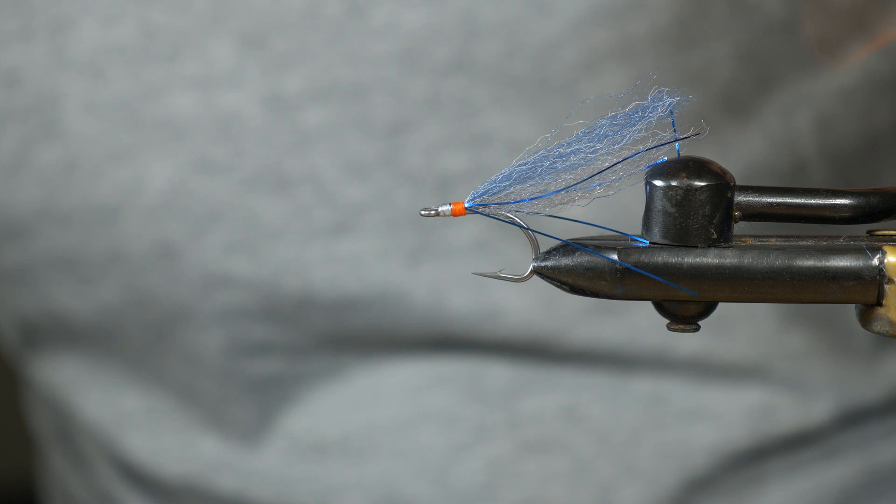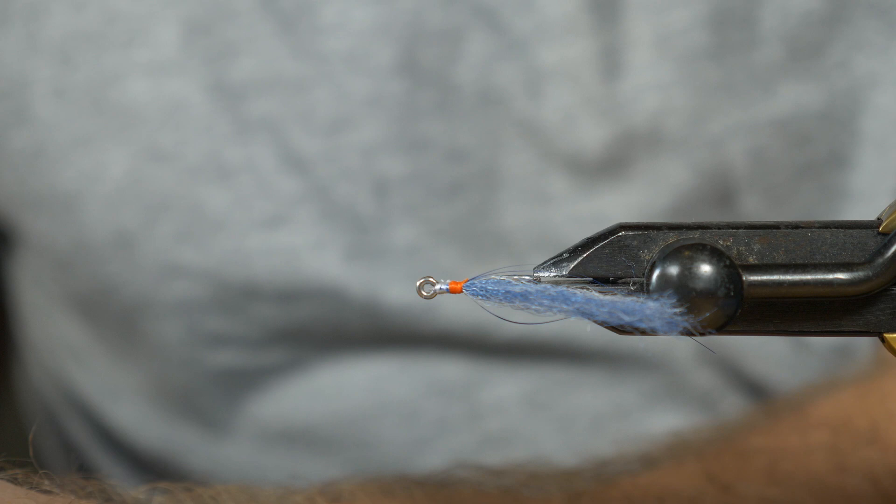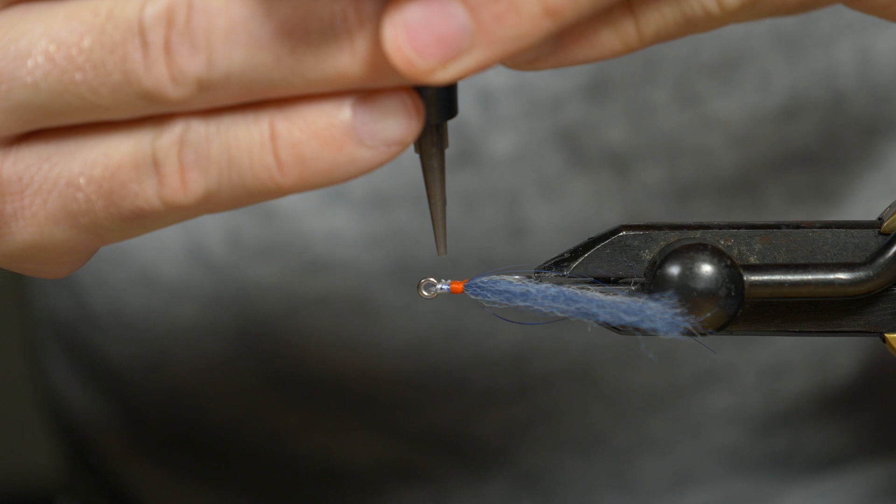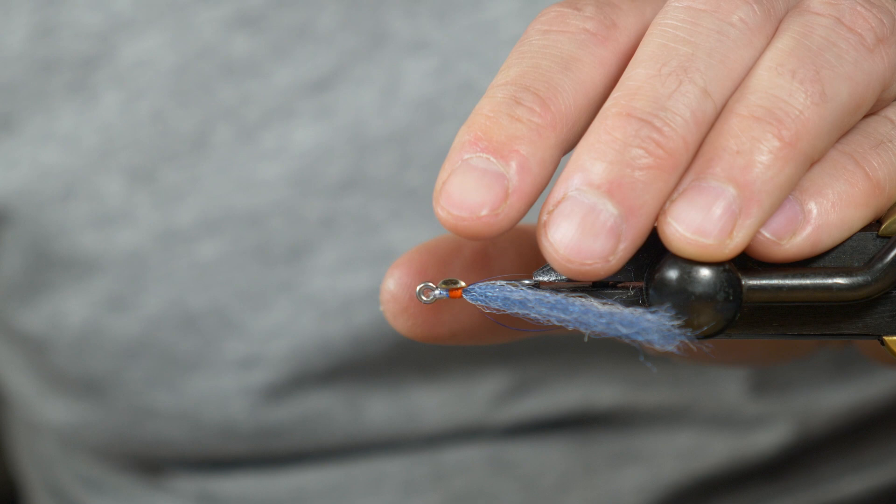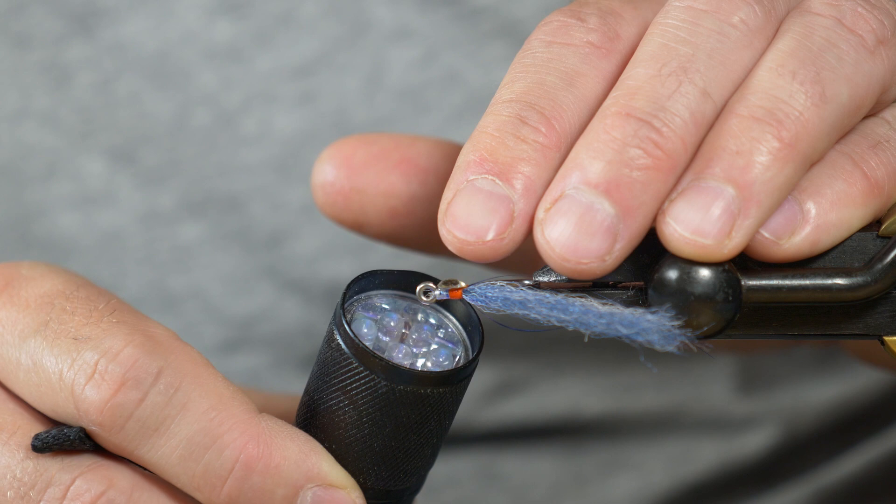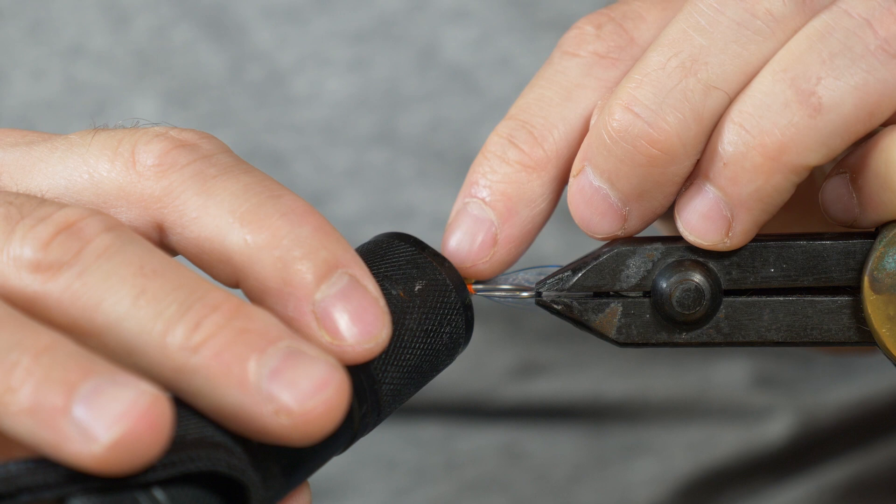Now we're ready to start with our eyes. Just going to turn the fly on its side. I'm going to put a drop of UV resin. Then when you've got it on there, you just zap it with your UV light. That's really just to hold it in place so you can easily do the rest of the fly. Then I'm going to do the other side, same thing. Keep it in place.